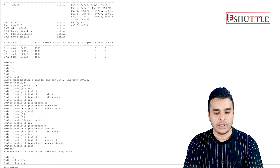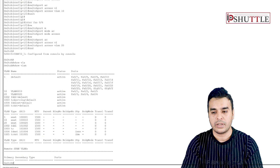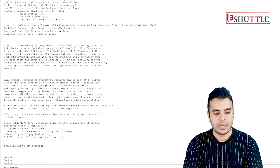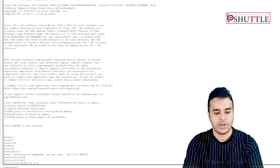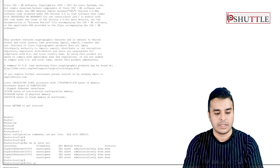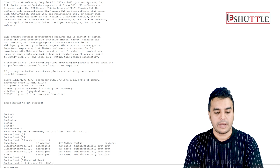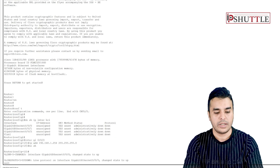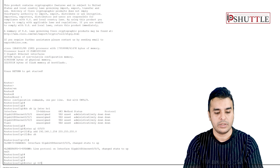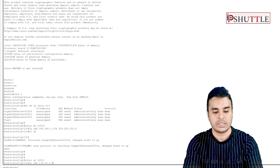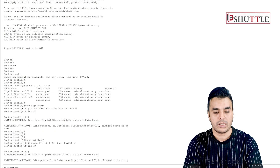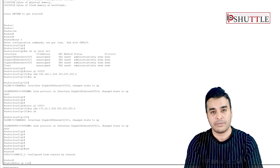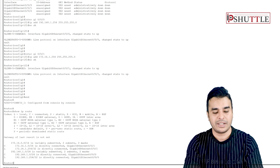Going to the router CLI, in configure terminal, show IP interface brief shows all interfaces down. Configure interface GigabitEthernet 0/0 with IP address 192.168.1.254 255.255.255.0 for VLAN 10. Configure interface GigabitEthernet 0/0/1 with IP address 172.16.1.254 255.255.255.0 and no shutdown. Running show IP route — note that on routers, IP routing is enabled by default, unlike on some switches.